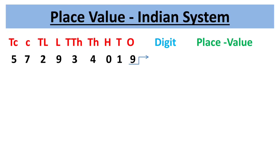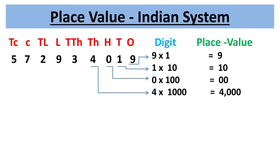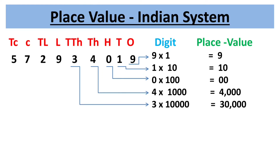Place value of 9 is 9 × 1 = 9. Place value of 1 is 1 × 10 = 10. Place value of 0 is 0 × 100 = 0. The second period is thousands, consisting of two place values: thousands and ten-thousands. Place value of 4 is 4 × 1000 = 4000. Place value of 3 is 3 × 10,000 = 30,000.